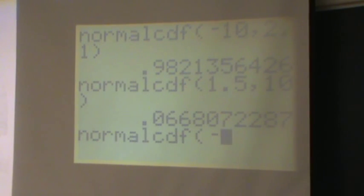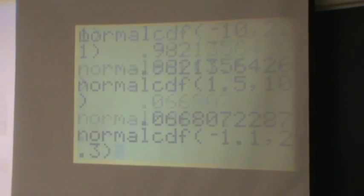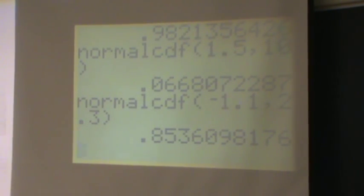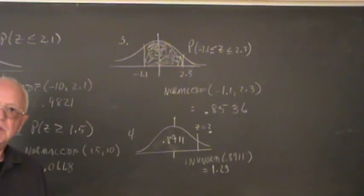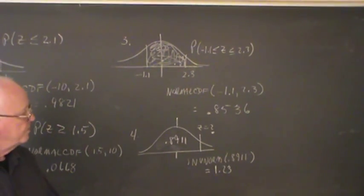I'm going to type in negative 1.1, comma, 2.3, and lo and behold, we get 0.8536. So that's the way you use the calculator to find probabilities.